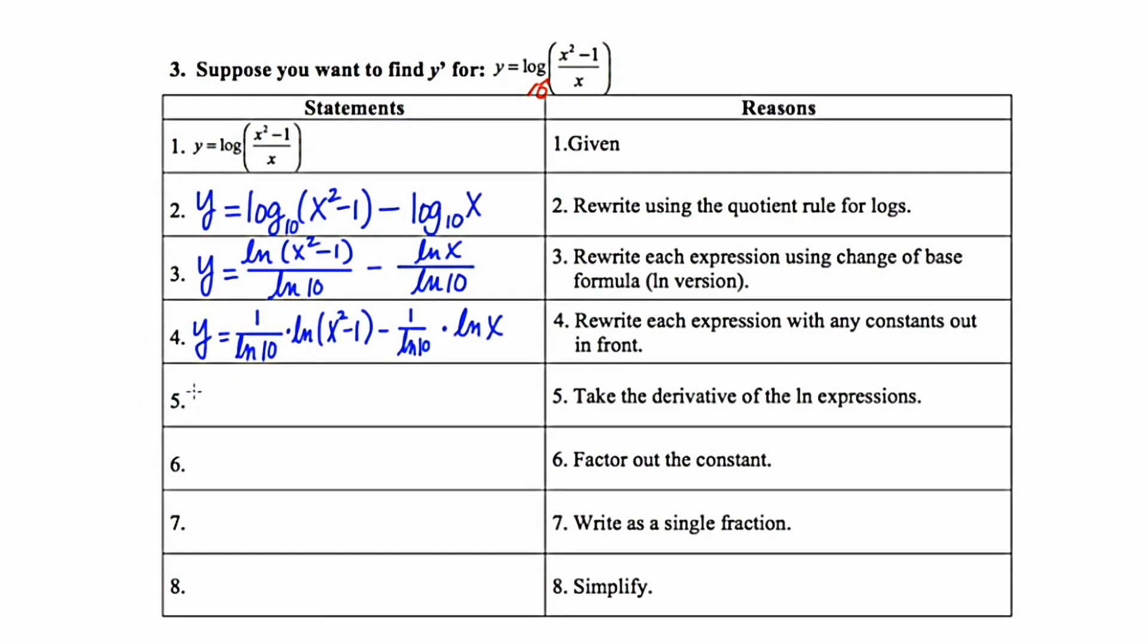So step 5 says to take the derivative of the natural log expressions. So since I'm taking a derivative, I will notate that accordingly as y prime. The leading constants that are out in front can just be rewritten. Now, when I take the derivative of a natural log, the argument goes into the denominator and its derivative goes into the numerator. The constants can be rewritten in front. Now I'm going to take the derivative of ln of x, so the argument goes into the denominator and its derivative goes into the numerator.